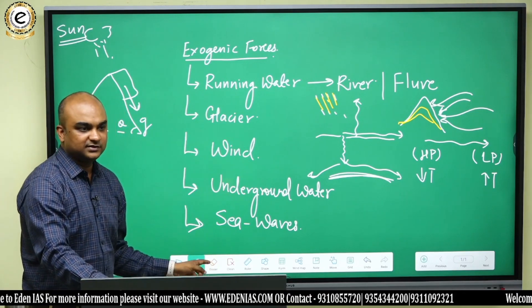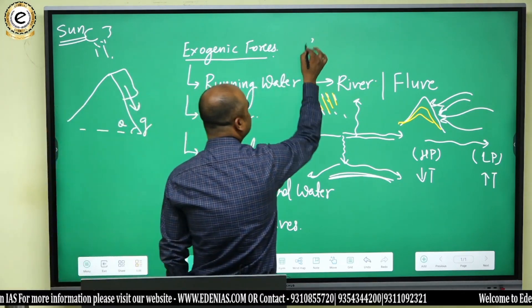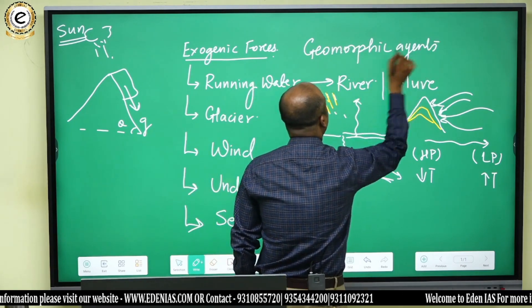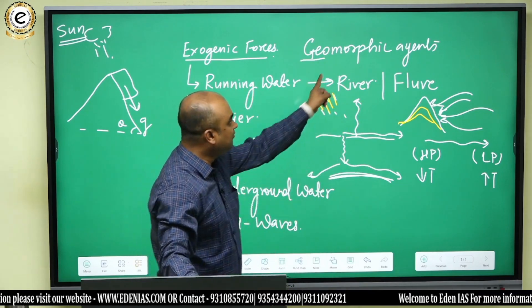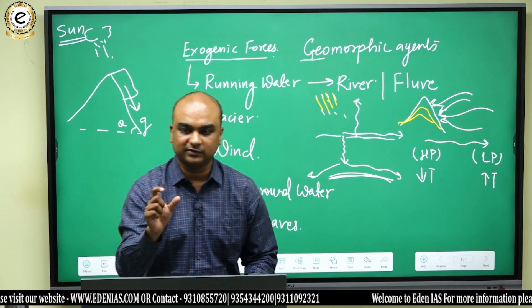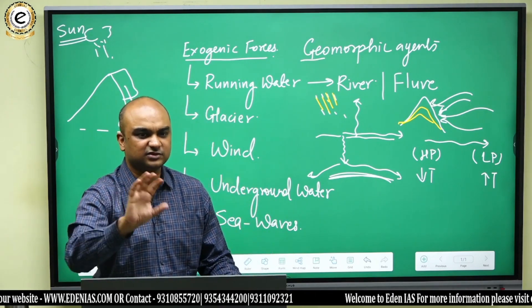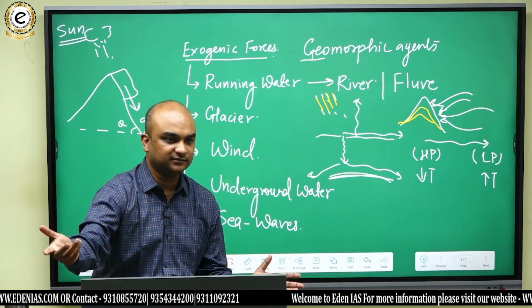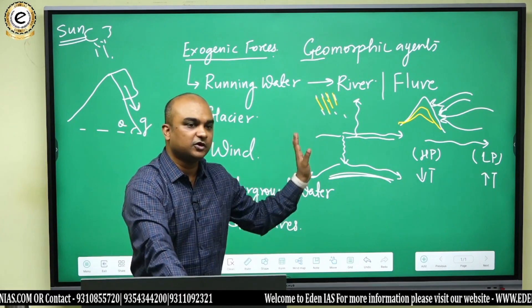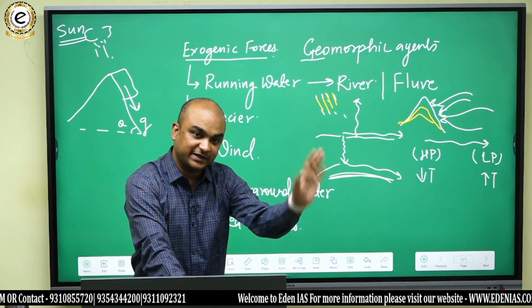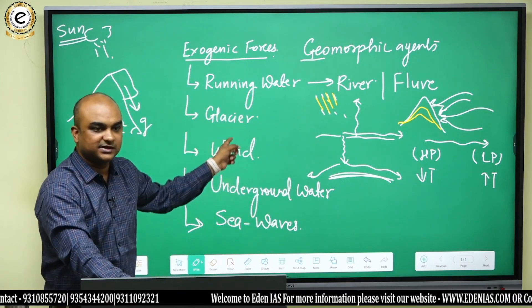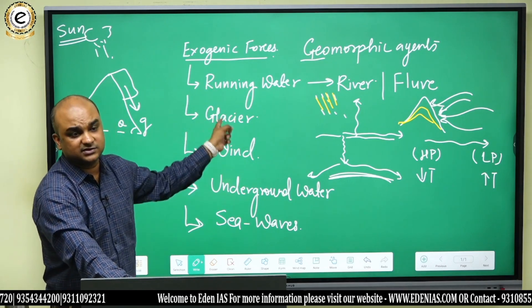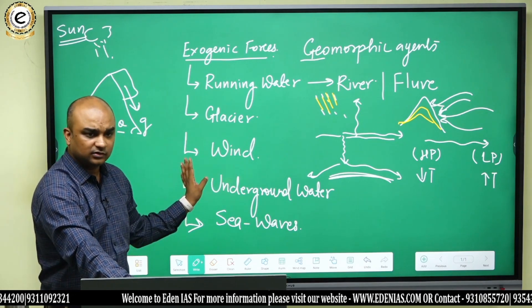So these five forces are known as agents of erosion, or another name for them is geomorphic agents. All of them are levelers — they are variability destroyers, not developers.